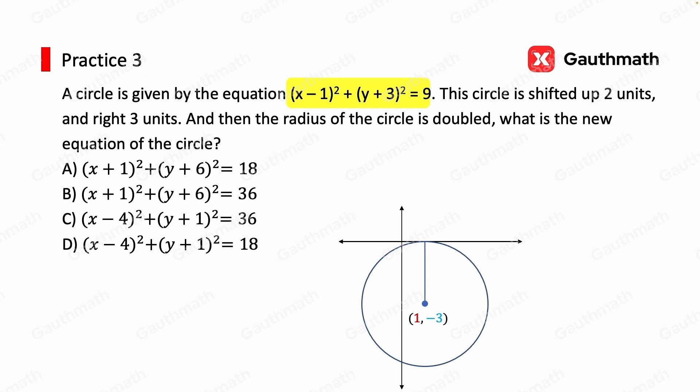And let's focus on the center for now. We first need to move the circle 2 units up. 1 and 2. So the new center is at 1, negative 1. And then 3 units to the right. 1, 2, and 3. And the center is now at 4, negative 1.